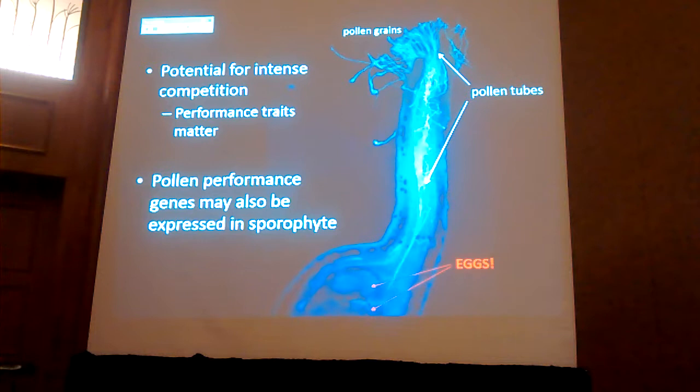Another important aspect is that pollen performance genes may also be expressed in the sporophyte, so there's a lot of overlap of gene expression between the gametophytes and sporophytes, unlike sperm in animals where there's really no haploid gene expression.